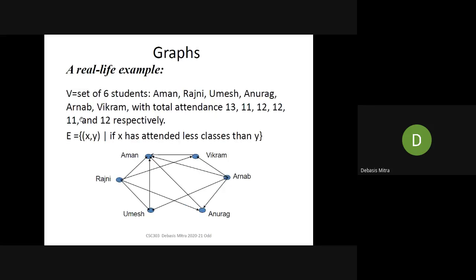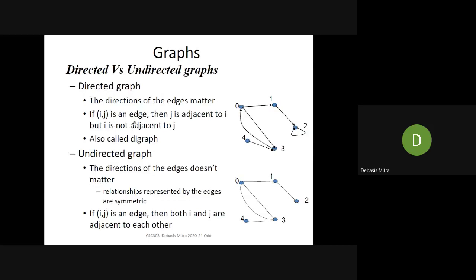Here's a real-life example: we have six students with total attendance figures. We define a directed edge from X to Y if X has attended fewer classes than Y. This gives us a typical directed graph. The formal definitions of directed and undirected graphs are shown here, and directed graphs are sometimes called digraphs for short.